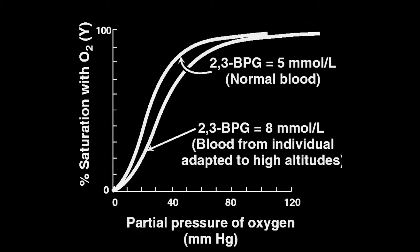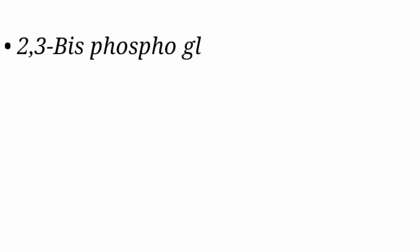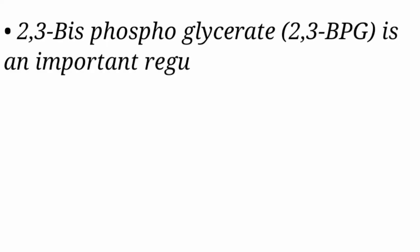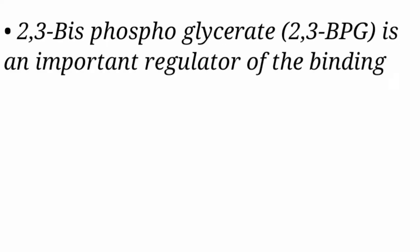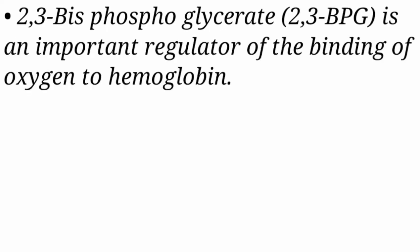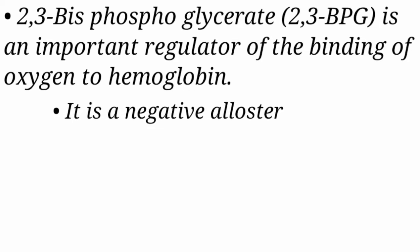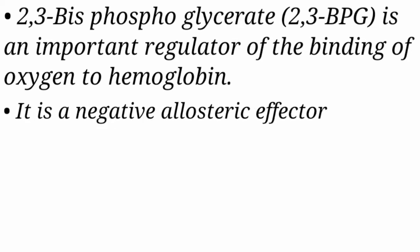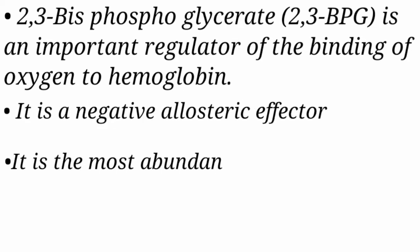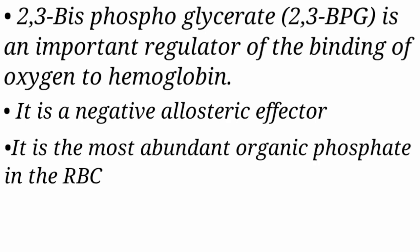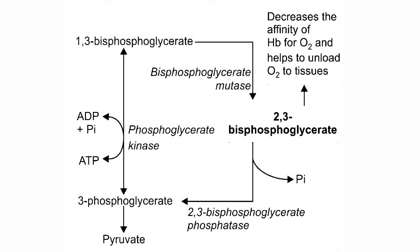2,3-bisphosphoglycerate shifts the oxygen dissociation curve to the right. It is an important regulator of the binding of oxygen to hemoglobin. It is a negative allosteric effector and the most abundant organic phosphate in the RBCs, produced by the Rapoport-Libering cycle.